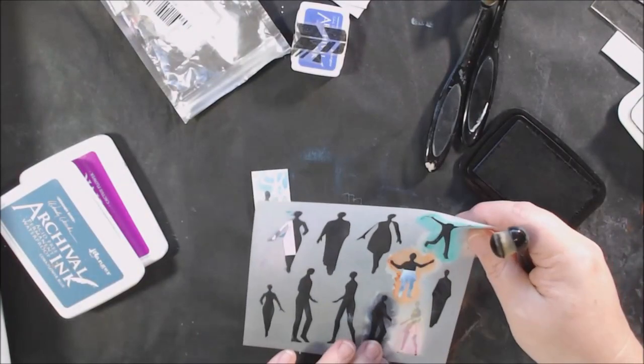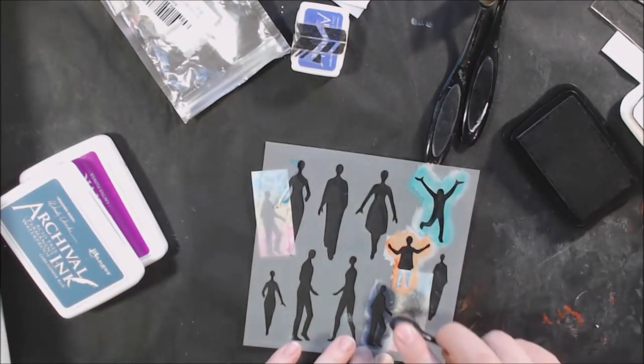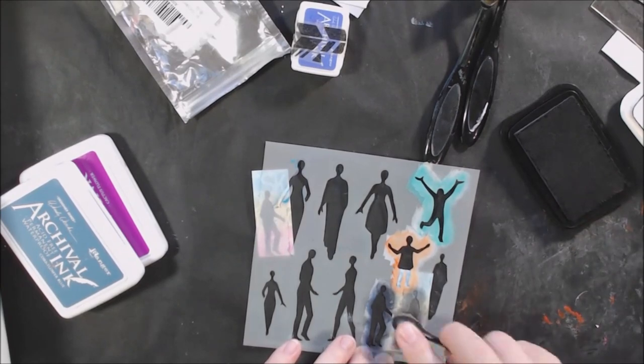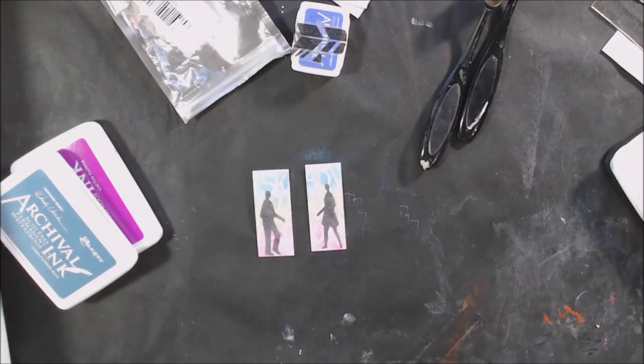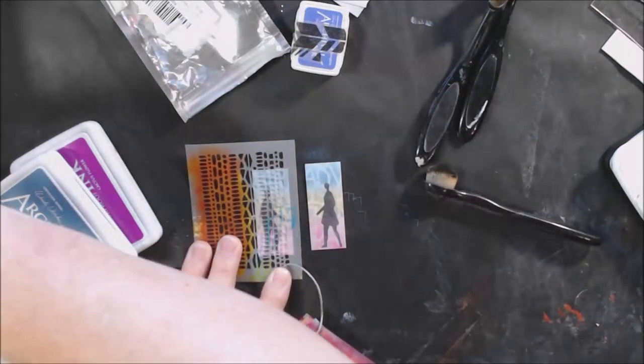And then I'm using these little figures, a male figure and a female figure with the gray archival ink. You know it's going to shrink, it's going to be black when it's done, and I also added just a little bit of decorative design as well using this ATC mix-up stencil.